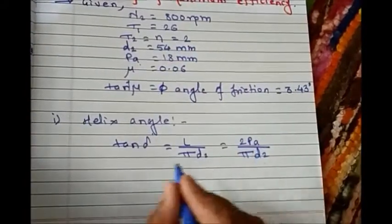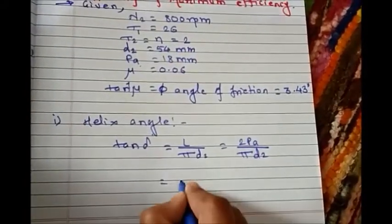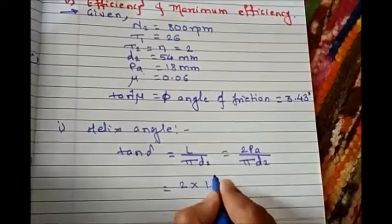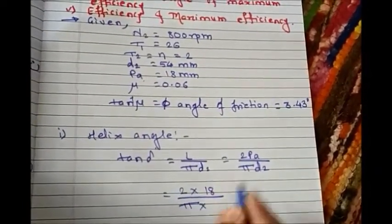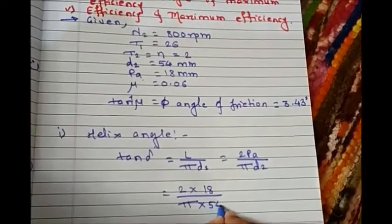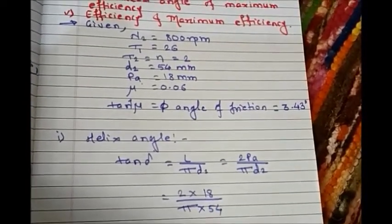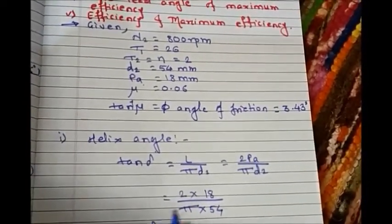So 2 PA is given, that is 18, and pi d2 is also known, that is 54. So we get tan of delta equals this value.